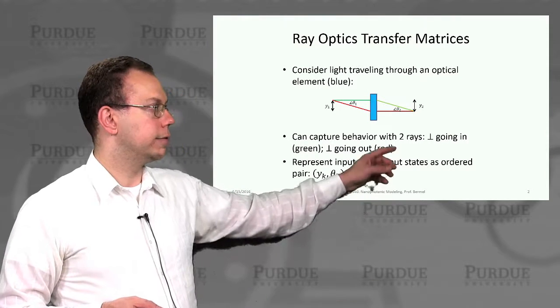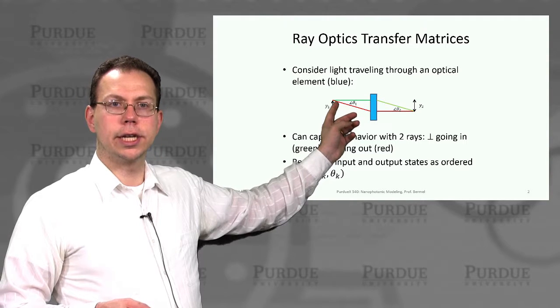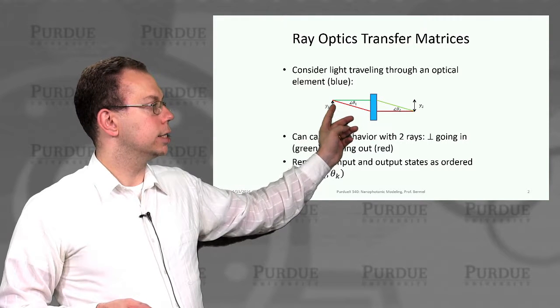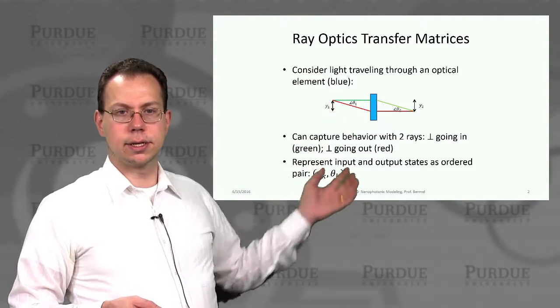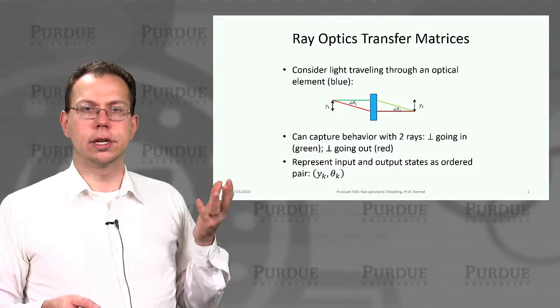Here we have an example problem which illustrates the utility of ray optic transfer matrices. In this case, you have a certain optical element, like a lens, and you have a certain height, y1.